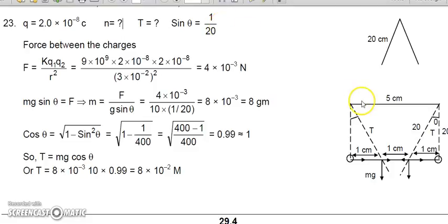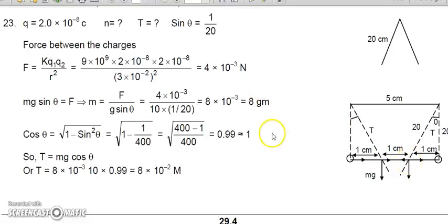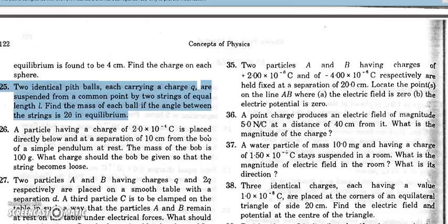In this diagram there are three forces. The separation between the two charges is 3 centimeters and the suspension points are 5 centimeters apart, so each ball has moved 1 centimeter. From the triangle, sin θ = tan θ = 1/20. The separation between charges is 3 centimeters, so we calculate the Coulomb force. Setting tan θ = F/mg gives the value of m. Then T cos θ balances mg and T sin θ gives F, allowing us to find the tension T.